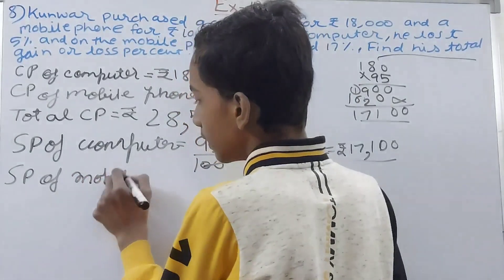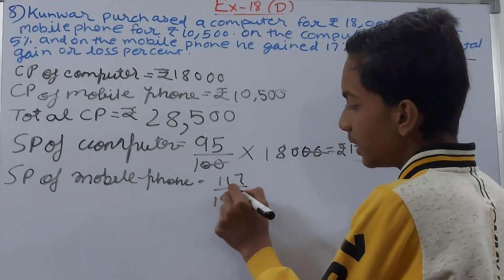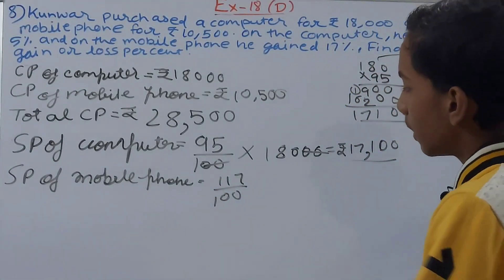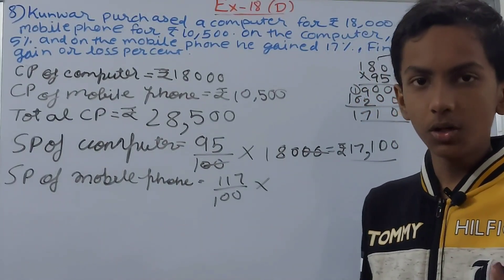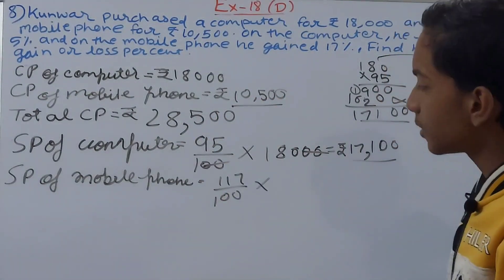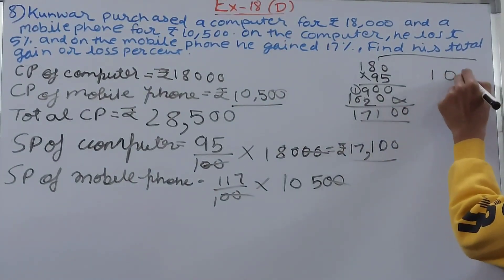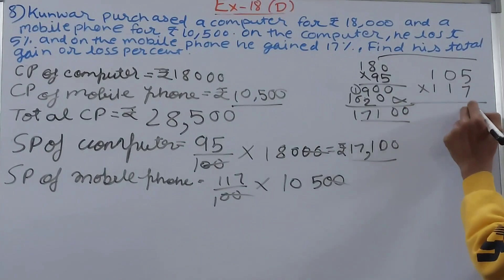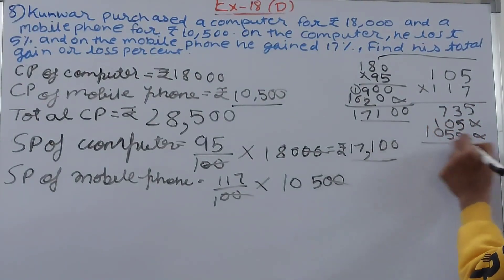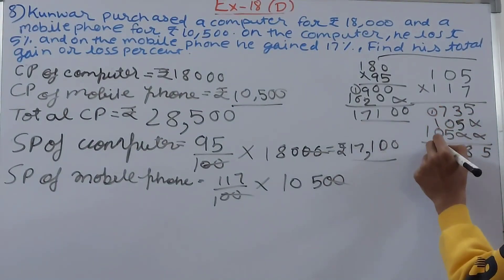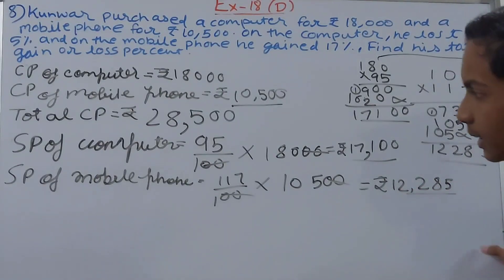Now we find the selling price of the mobile phone. Since he gained 17% on it, we use: SP = (100 + gain%) / 100 × CP = 117/100 × 10,500. Again, use the cost price of the mobile phone only. Cancelling the two zeros: 105 × 117 = 12,285. So the selling price of the mobile phone is ₹12,285.